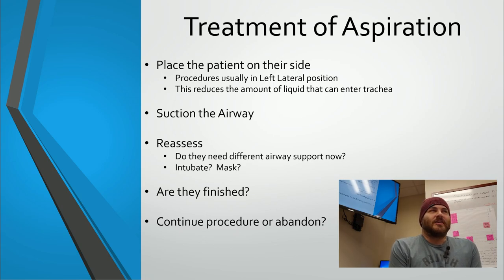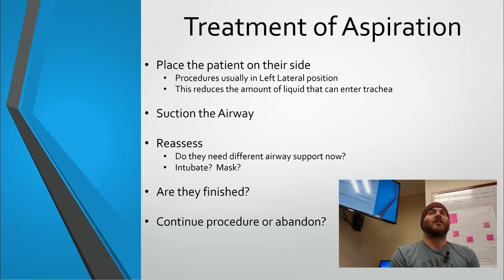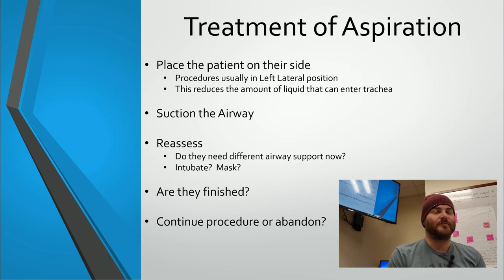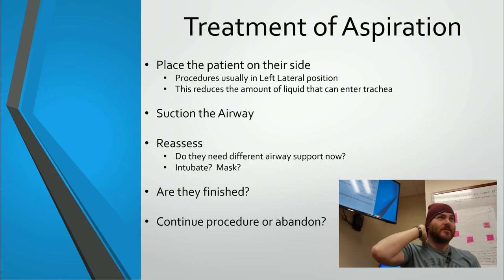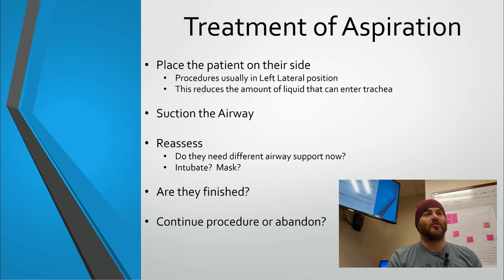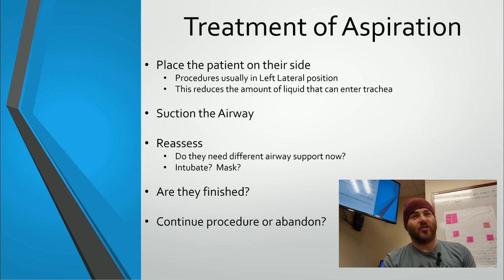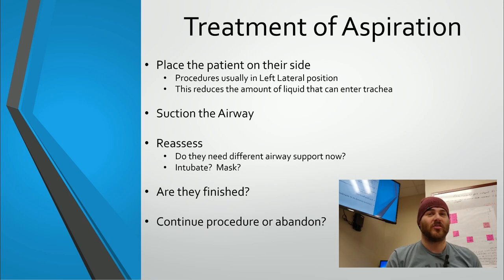If a patient does aspirate, the first thing you'll usually notice is a lot of coughing — even under general anesthesia, aspiration is so incredibly stimulating that they'll cough. Sometimes hypoxia is the first sign. For treatment, immediately put the patient on their left side. In endoscopy we routinely position patients on their left side so gravity helps keep material away from the vocal cords.